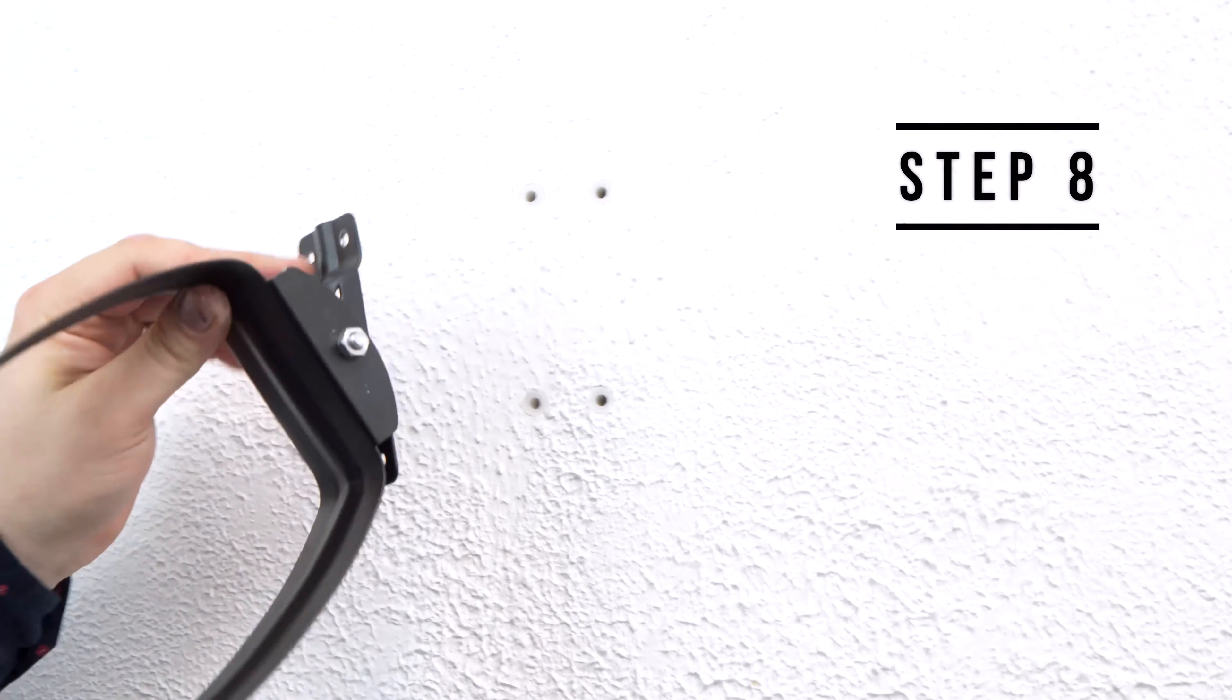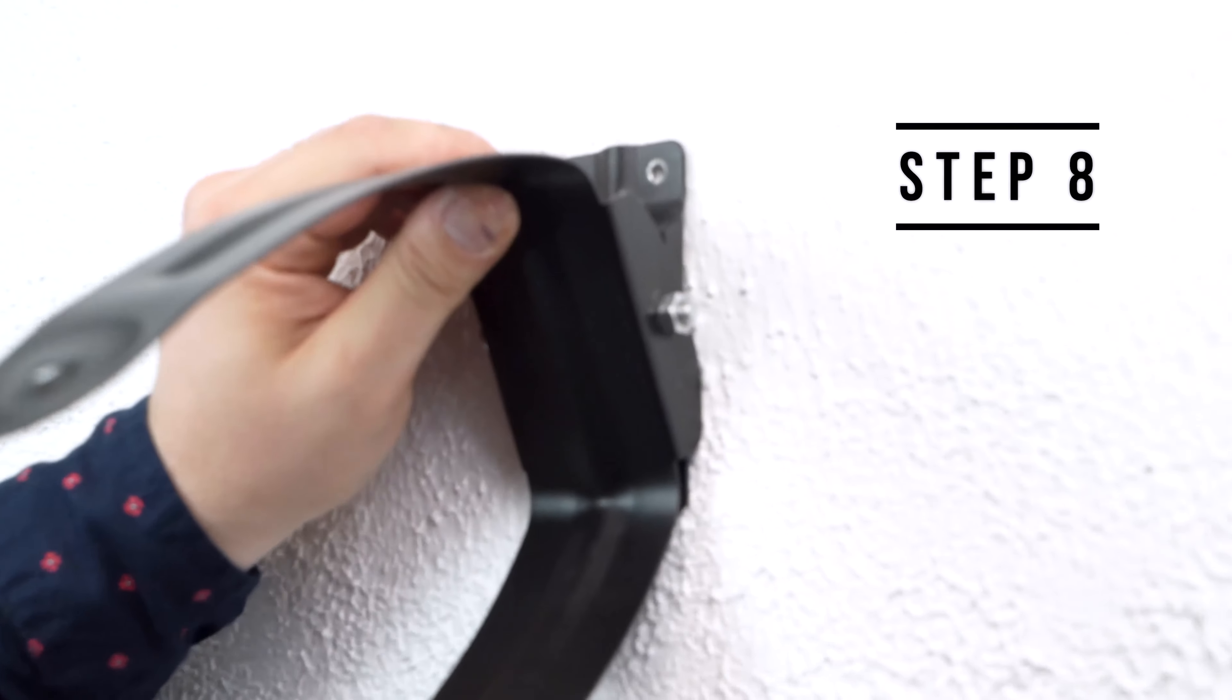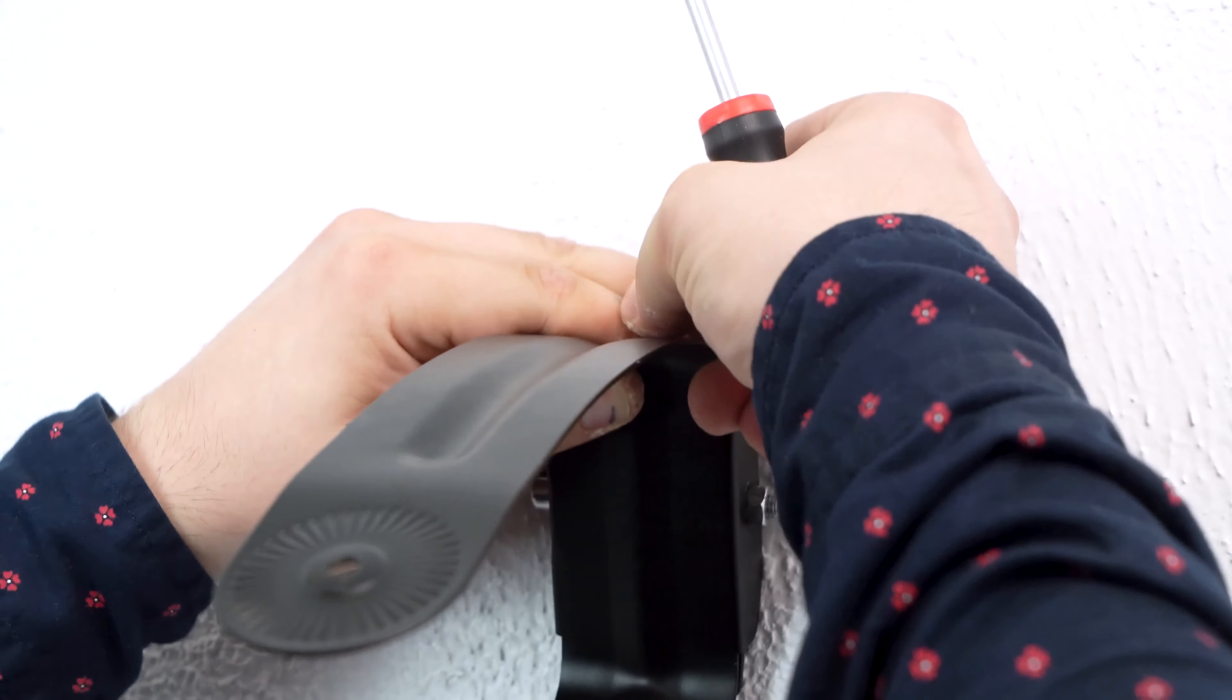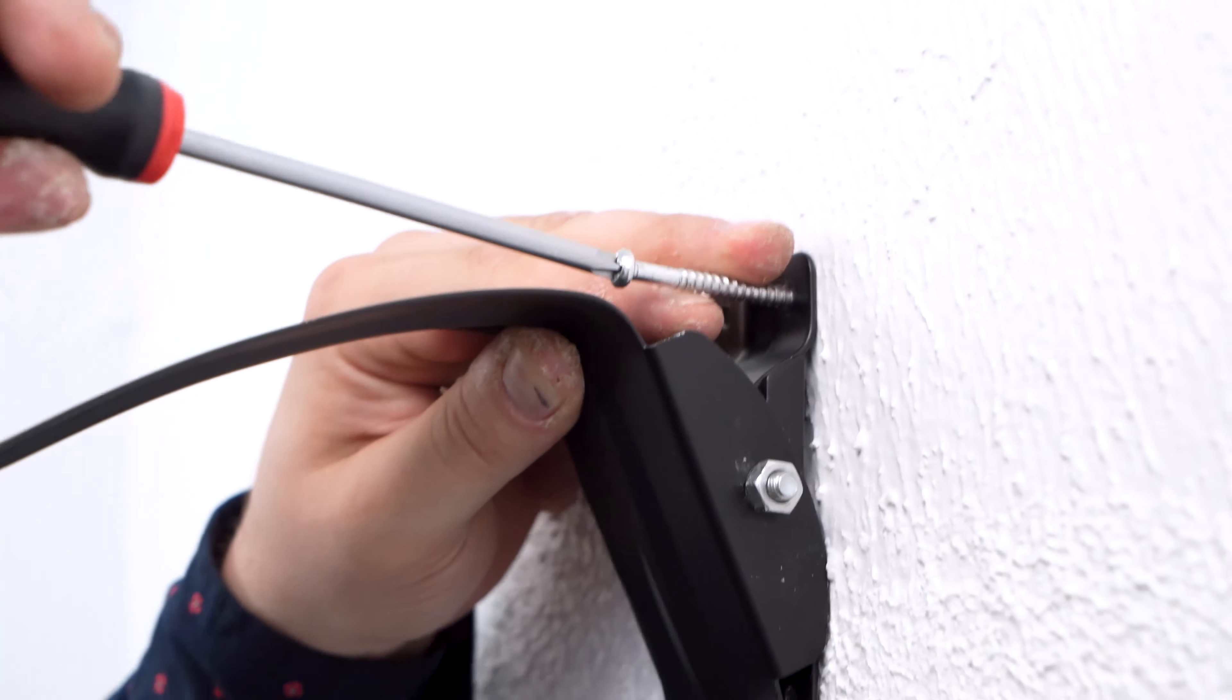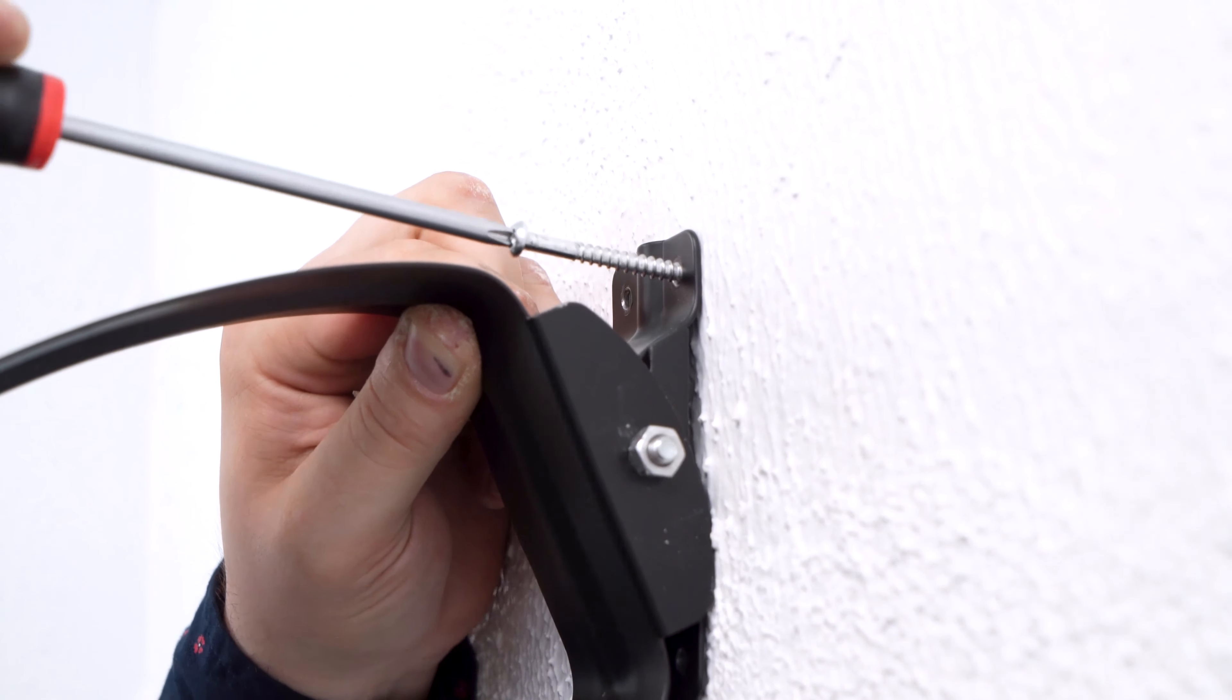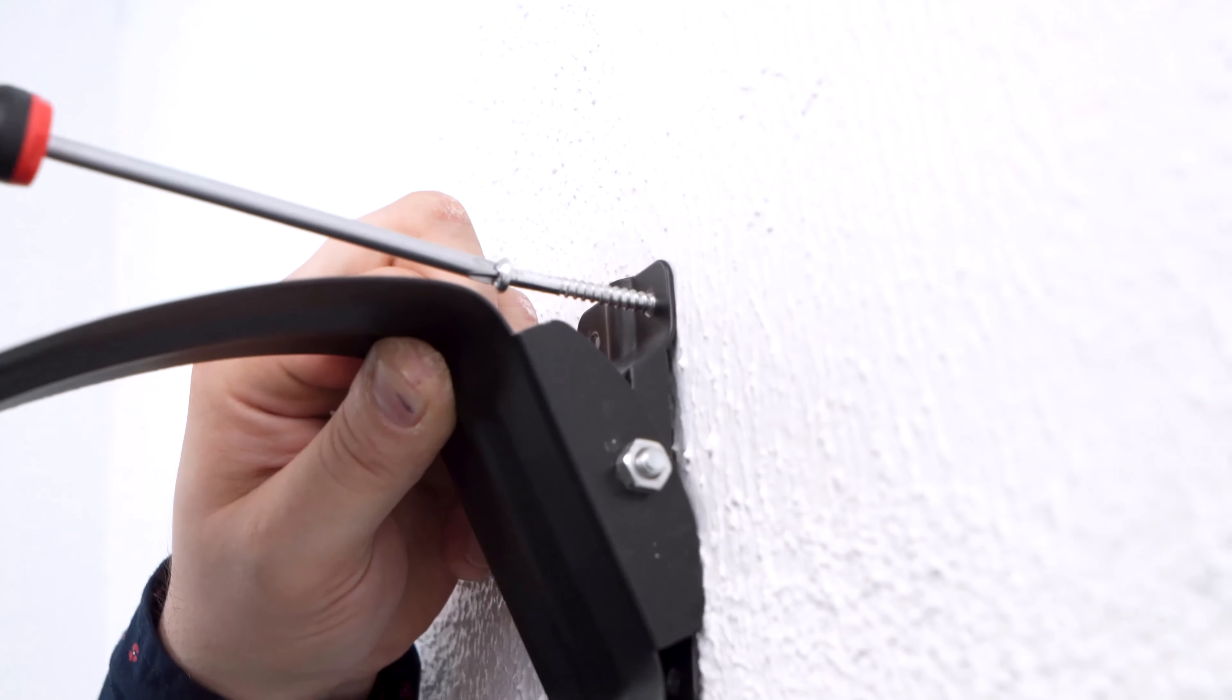For step number eight we're going to line our bracket with the holes that we previously made and once it's lined up start by putting the screw pushing it all the way to the back. You can do it with a power drill or a regular screwdriver.